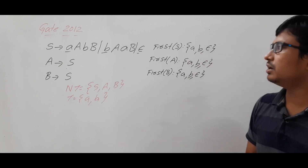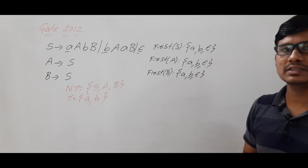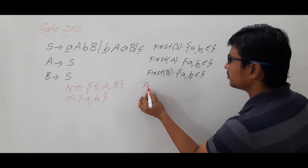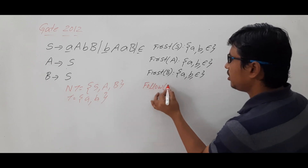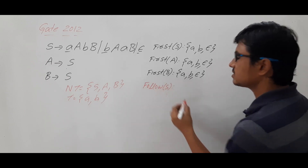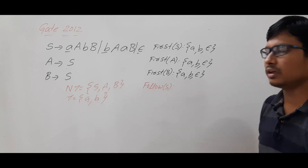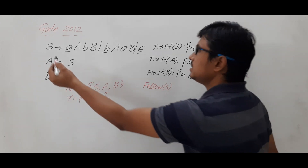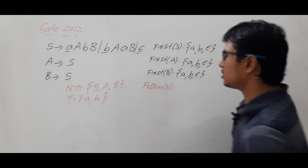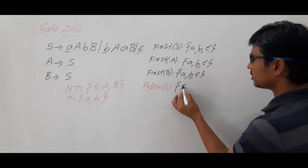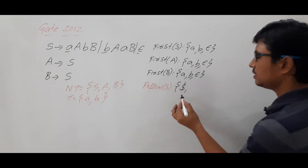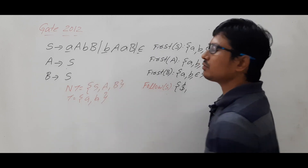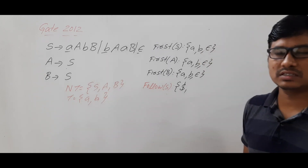Now let me discuss how to compute the FOLLOW of S. FOLLOW of S will consist of dollar. Why? Because S is the start symbol — you must include the dollar sign. Is it clear? Now let me look at where S appears in the right-hand side of the productions.